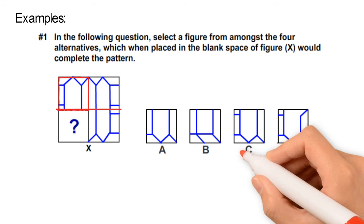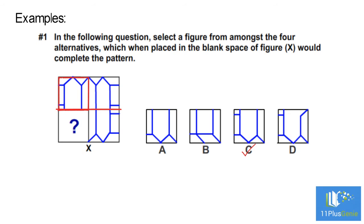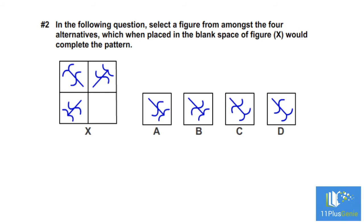Example number two: In the following question, select a figure from among the four alternatives which, when placed in the blank space of figure X, would complete the pattern. In this question, there is no line symmetry.